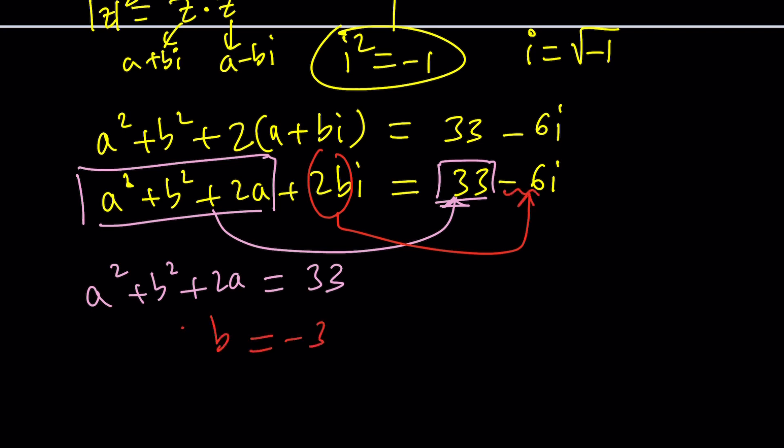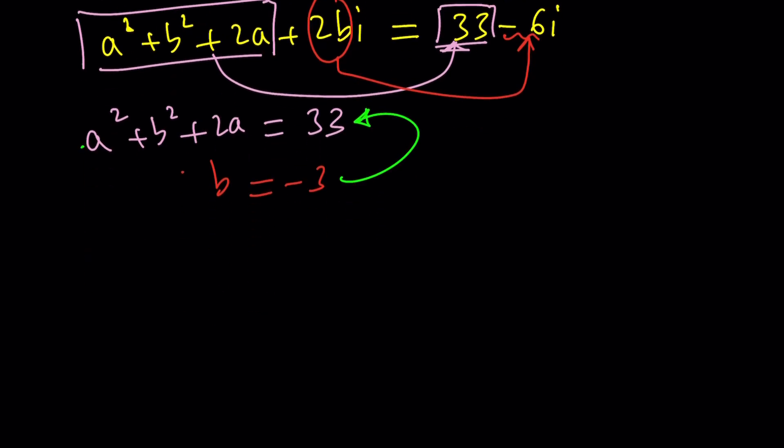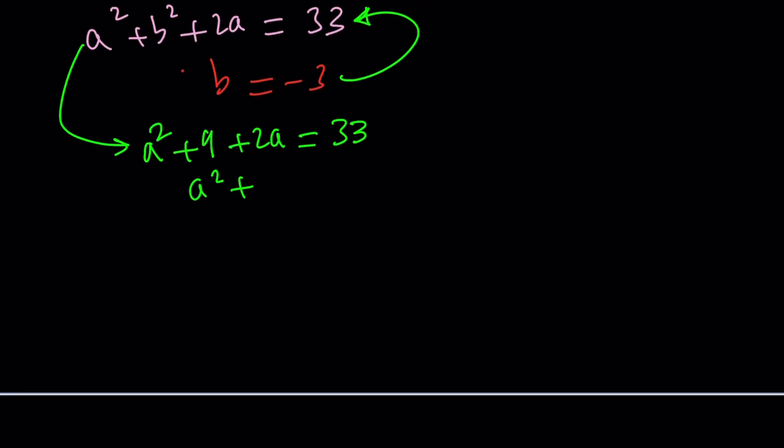And that helps out a lot because you can just go ahead and substitute that, making that equation a lot simpler. So we get a squared plus b squared, which is 9, plus 2a equals 33. And then you can go ahead and subtract 9 from both sides if you want.